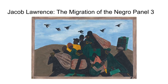The painting you see here is the third panel of Migration of the Negro by Jacob Lawrence. It depicts the movement of African American families from the south to the north that took place in the 1910s and 1920s, known as the Great Migration, which is a vocabulary word we studied earlier in the unit.